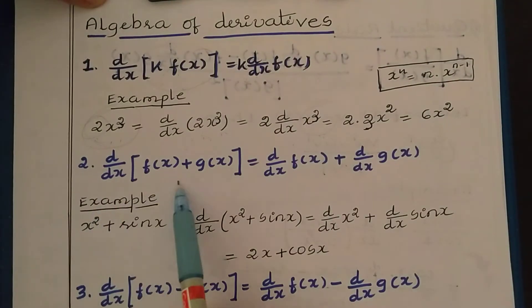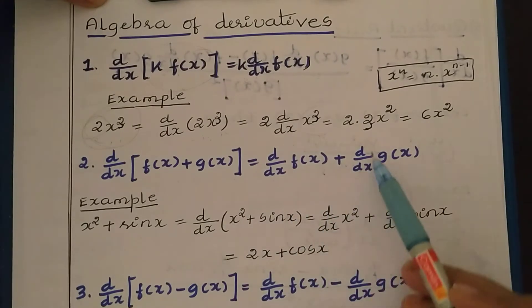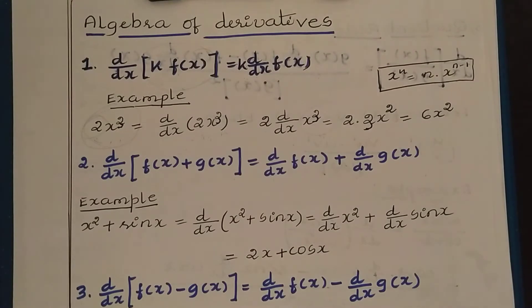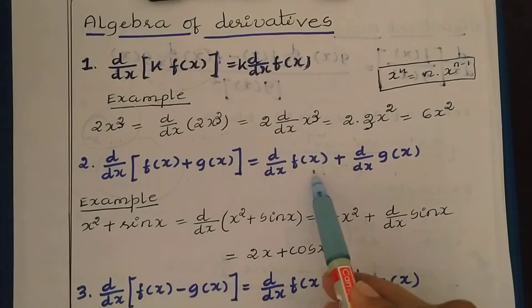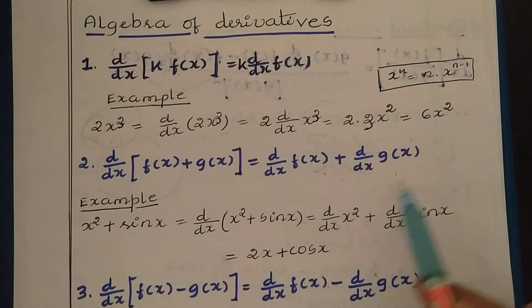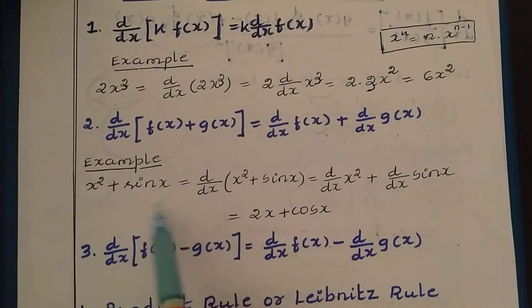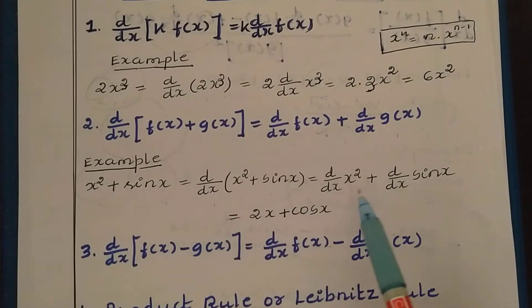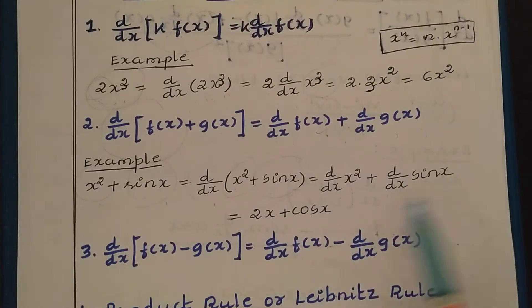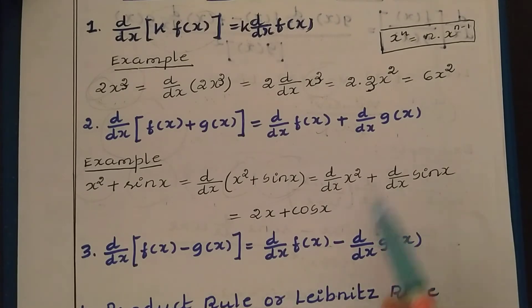The second rule is: d/dx of [f(x) + g(x)] = d/dx of f(x) + d/dx of g(x). If two functions are added, you can split them and find each derivative separately, then add the results. For example, if f(x) = x² and g(x) = sin x, the derivative of x² is 2x and the derivative of sin x is cos x — so the answer is 2x + cos x.